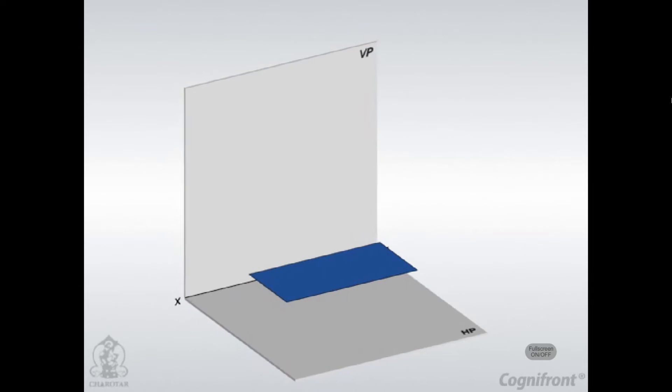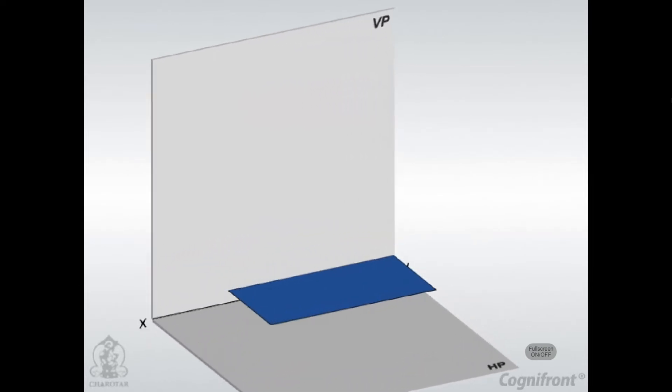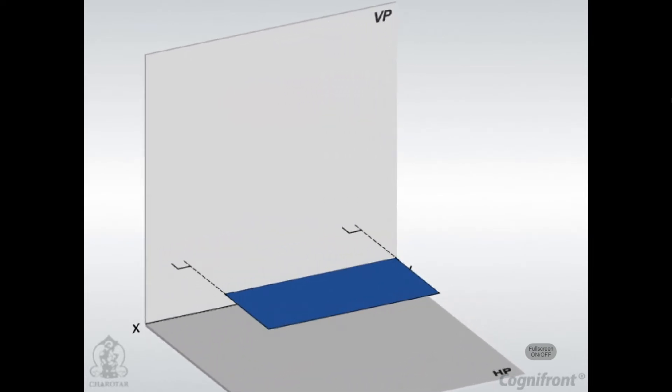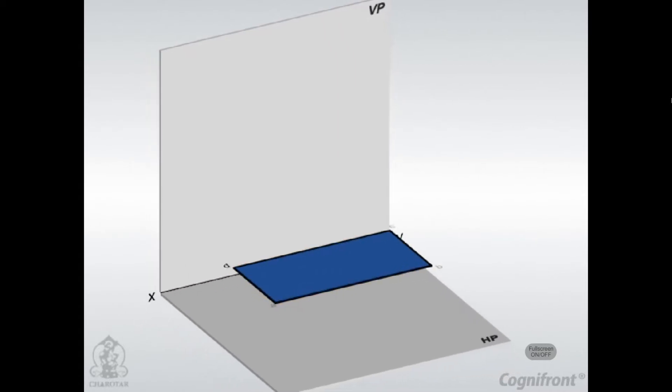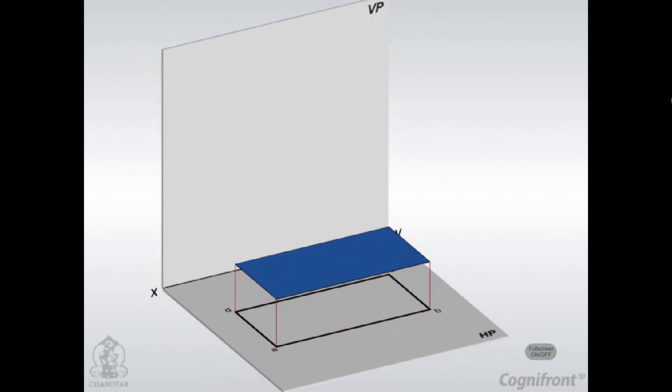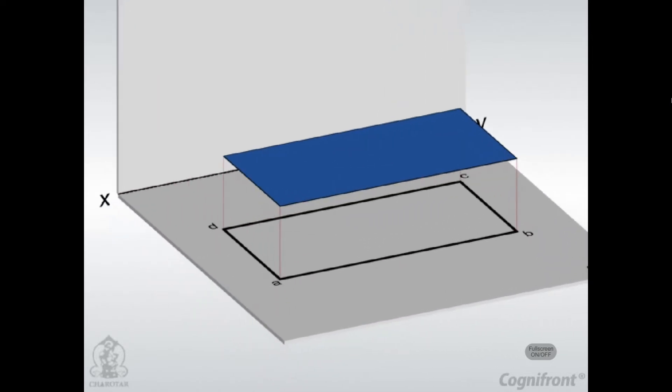The plane is first assumed to be parallel to HP with its shorter edge perpendicular to the VP. In this position, true shape and size of the plane is given by its projection on HP. The front view will be a true line parallel to the reference line XY.